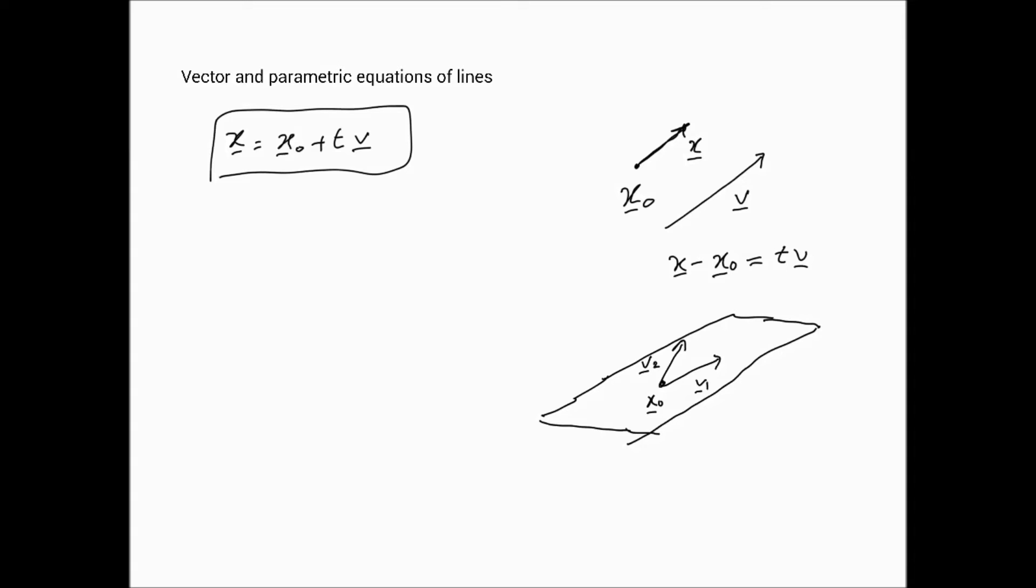Now, if we construct a parallelogram such that x is a vector, then we have a very straightforward relationship, which is that the vector x minus x0 is, of course, the sum of v1 plus v2.